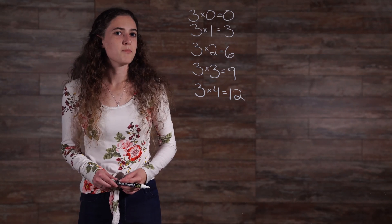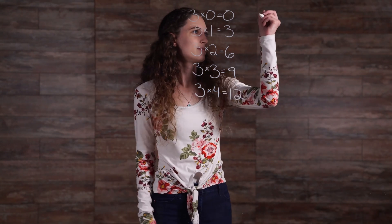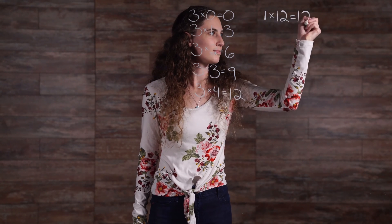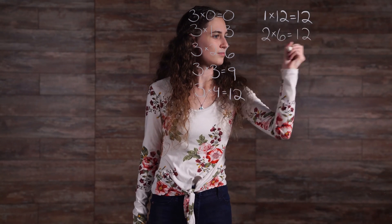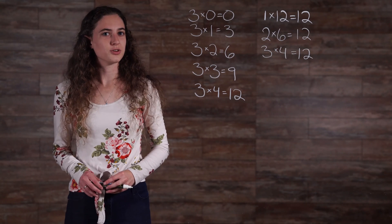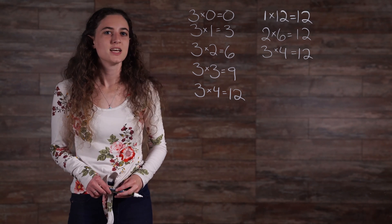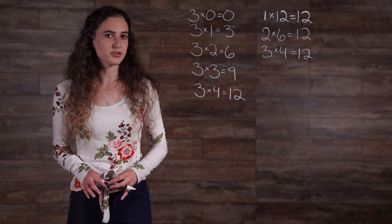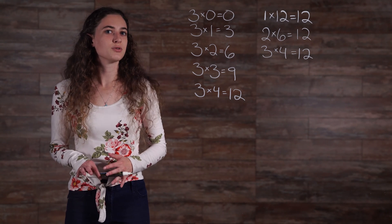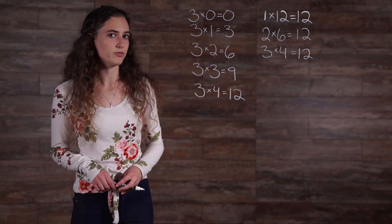Some numbers are multiples of many different numbers. Take 12, for example. 12 is a multiple of 1, 2, 3, 4, 6, and 12. These numbers can be multiplied by other numbers to obtain 12. As a reminder, 1, 2, 3, 4, 6, and 12 would be called factors of 12.